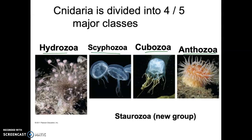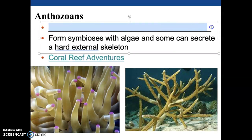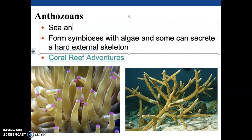Those are the four classes we're going to explore and talk about as we look at the diversity within the Cnidarians. Make sure this is a group you understand down to the class level. We're going to start out with Anthozoa, which includes all of the sea anemones and the corals.